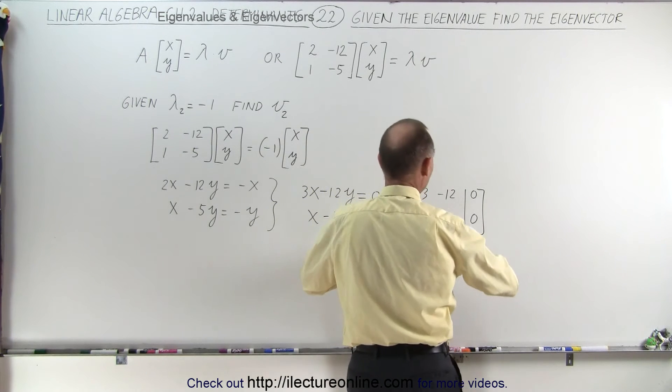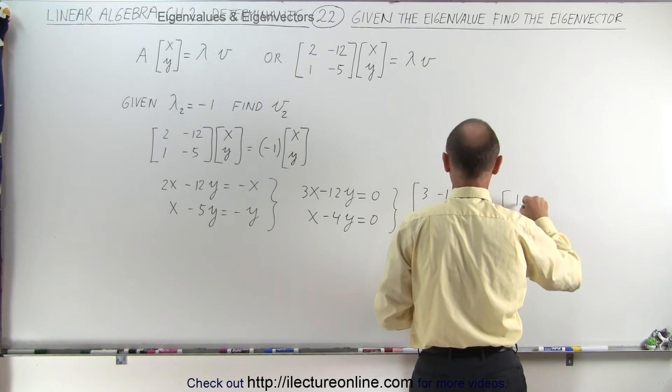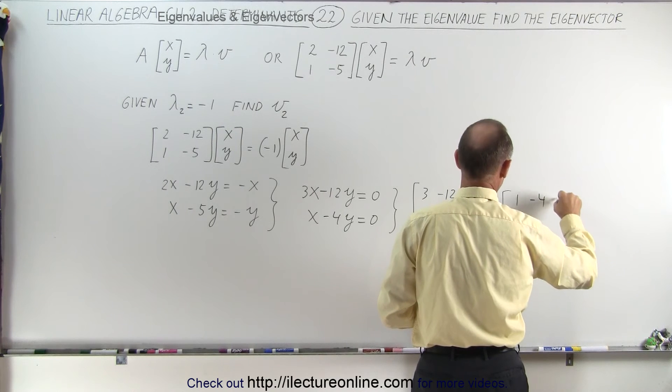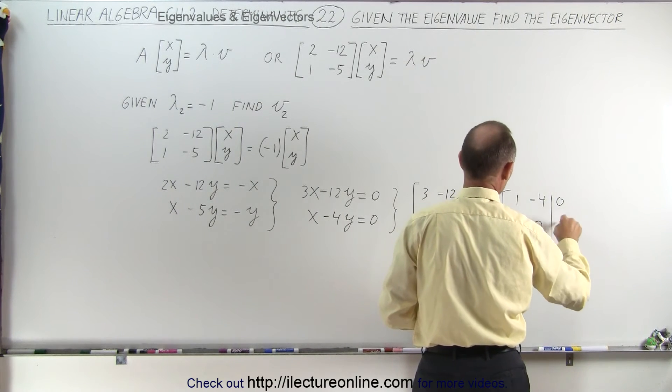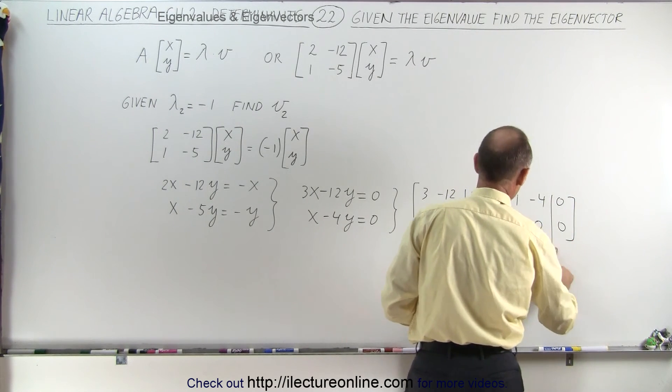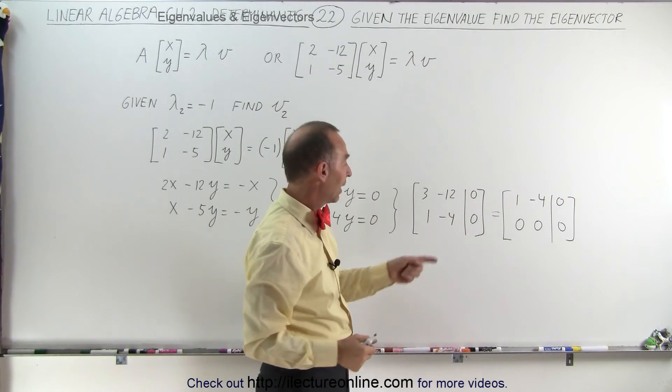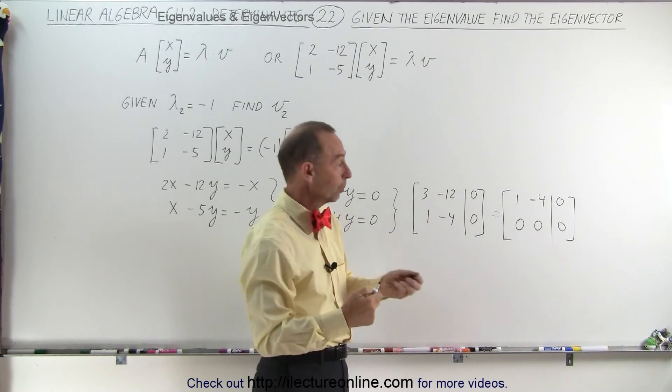We can then say that this is equal to 1, negative 4, and 0, and we turn that into 0, 0. So basically what we can do is swap the two rows and eliminate one of them because they're duplicate rows.